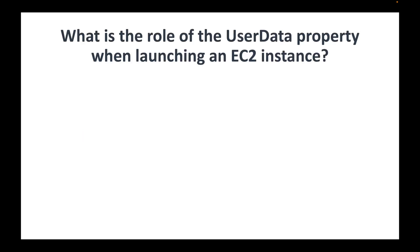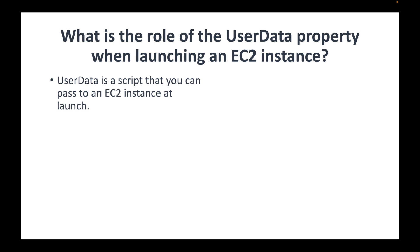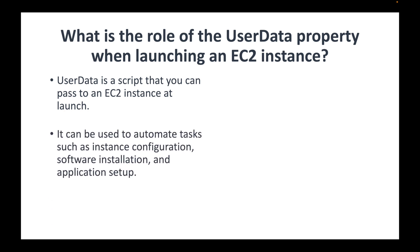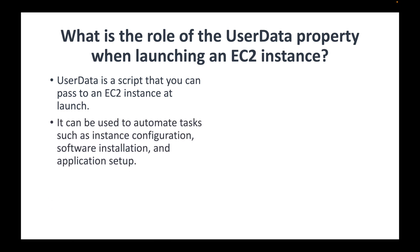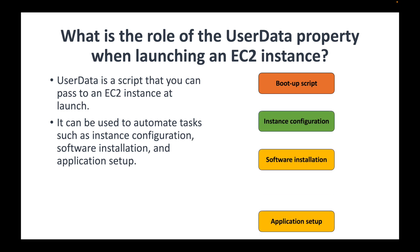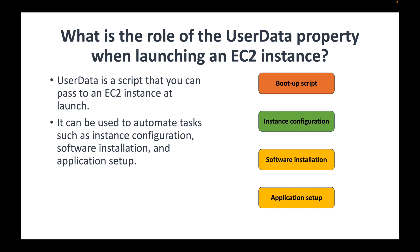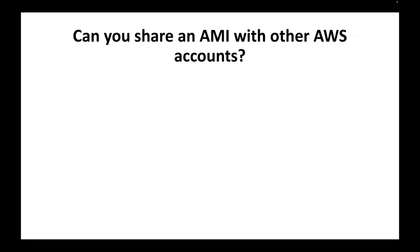The next question is: what is the role of the user data property when launching an EC2 instance? User data is a way to pass a script that is executed when the EC2 instance is being launched. If you have a boot-up script that needs to run, you can use user data for that. We can use it to automate tasks such as configuring the EC2 instance, installing packages or applications, or setting up software — all triggered automatically at launch.